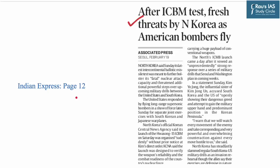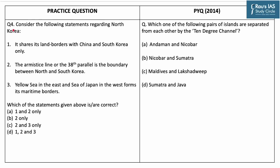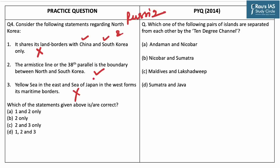The next MCQ is based on an article from page number 12 of Indian Express. North Korea recently conducted an intercontinental ballistic missile test. The practice question asks: consider the following statements regarding North Korea. Statement 1: it shares its land borders with China and South Korea only — this is incorrect, as North Korea shares land borders with three countries: China, South Korea, and Russia. Statement 2: the armistice line or the 38th parallel is the boundary between North Korea and South Korea — this is correct. Statement 3: the Yellow Sea in the east and the Sea of Japan in the west form its maritime borders — this is incorrect.